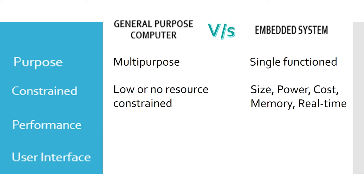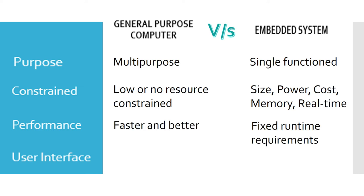Unlike embedded systems, general purpose computers are richer in resources, and they might face cost and average speed as their constraints. Embedded systems are designed for fixed runtime requirements — these requirements are predefined and the system must fulfill them to function normally. In case of a general purpose computer, they are much faster and their performance is much better than an embedded system.